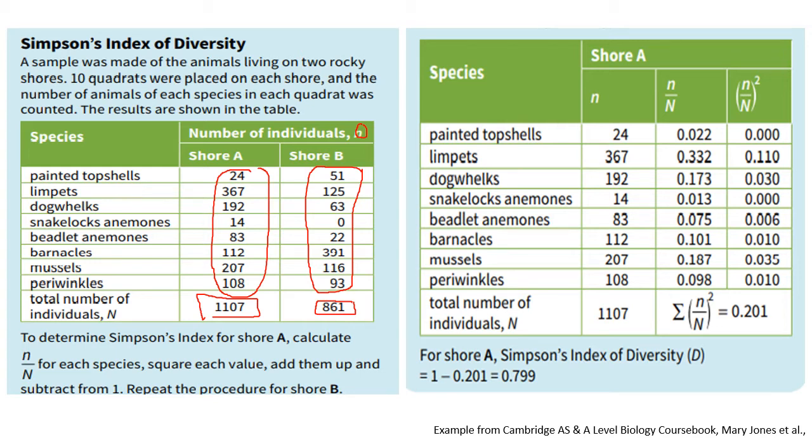So this is for shore A for example and for shore A you can see those are our small n values and we have our big N which is 1107. What we typically do is we just say small n divided by big N, so 24 divided by 1107 and you repeat it for each value until you get here. Once you get here you then square each of these values so 0.022 squared. I also want to point out that usually whenever CIE gives you values with three decimal places, please also keep your answers in three decimal places. Don't try to start looking for numbers where you go 0.0001 whatever because even when you approximate that you're still going to get 0.000.